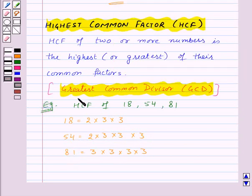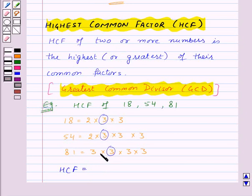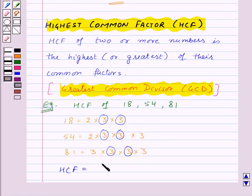Now HCF is the highest or greatest of the common factors. So let's find out the HCF of these 3 numbers. The factor 3 is common in all these 3 numbers, and again the factor 3 is common. As we can notice, there is no other factor which is common to all these 3 numbers. So the HCF of these 3 numbers is 3 into 3, which is equal to 9.